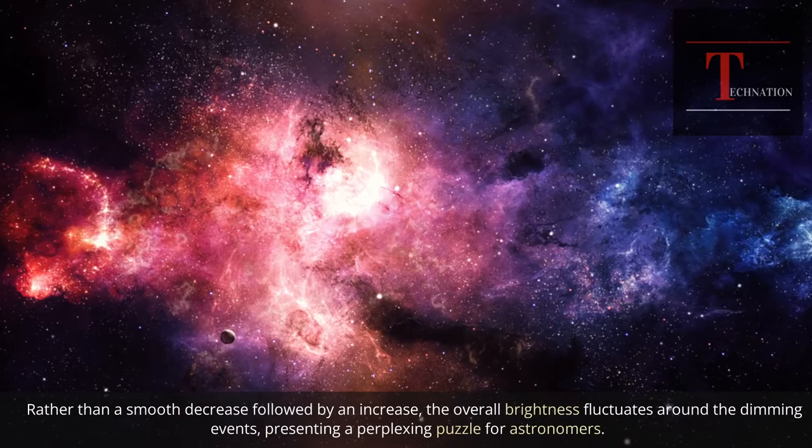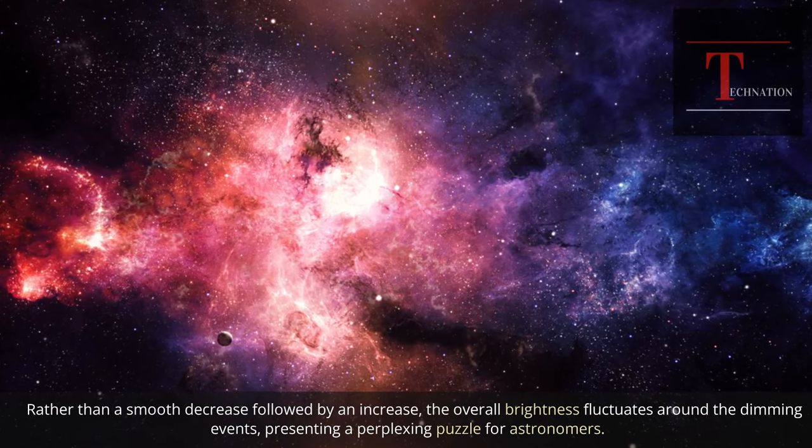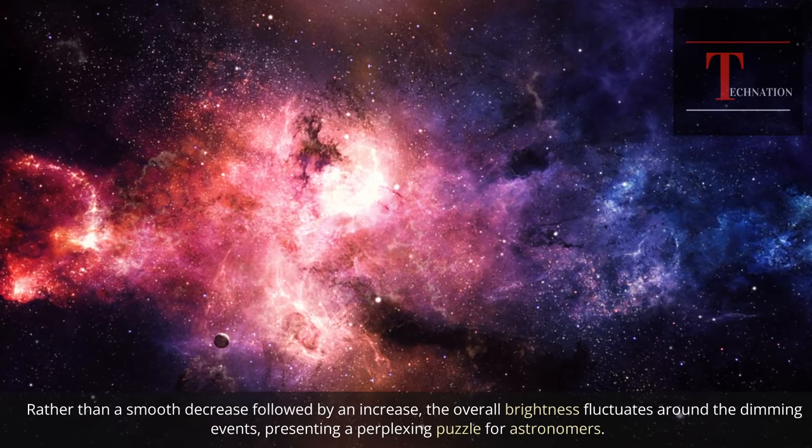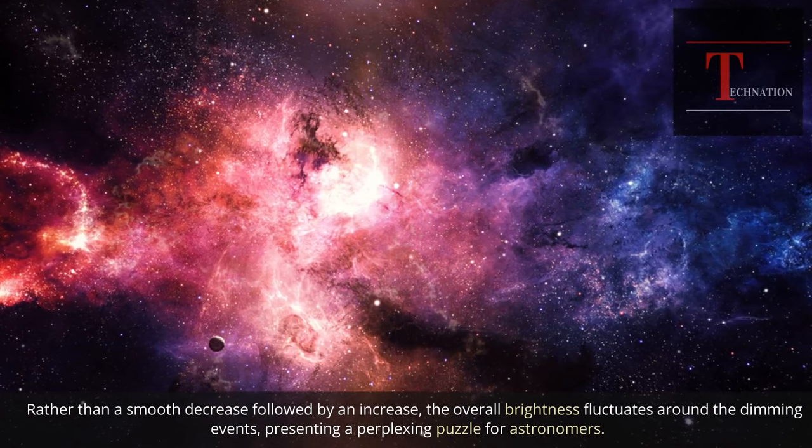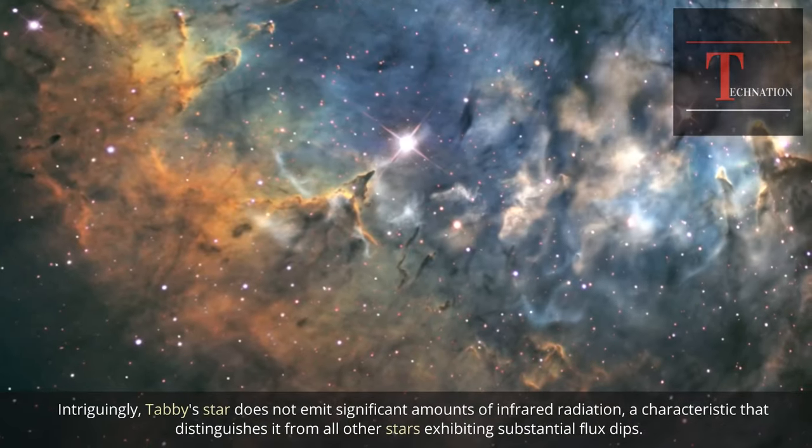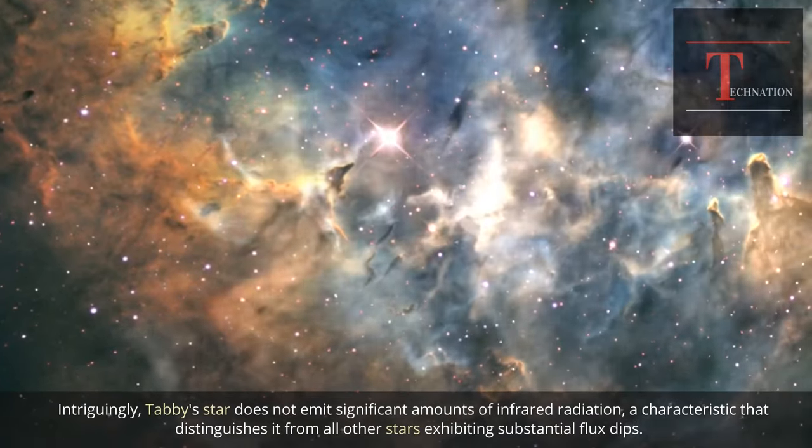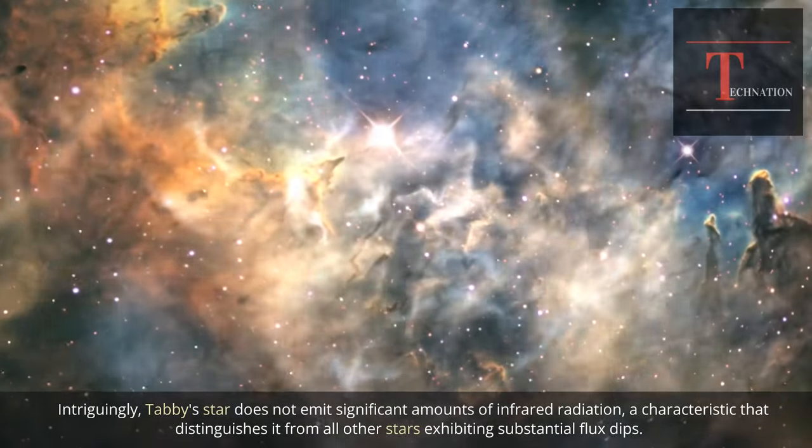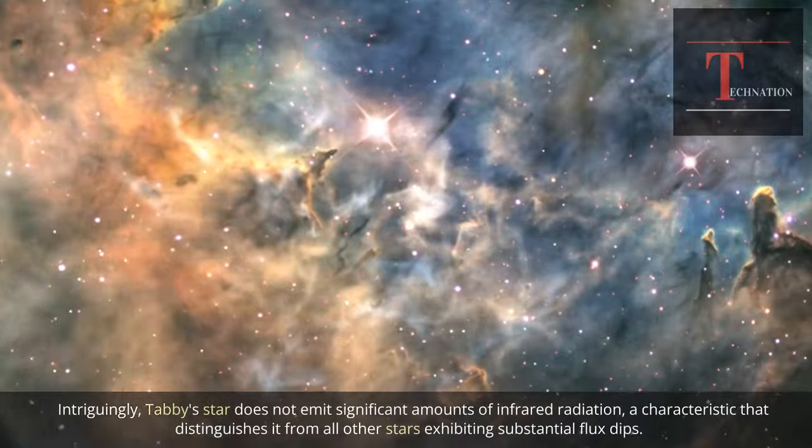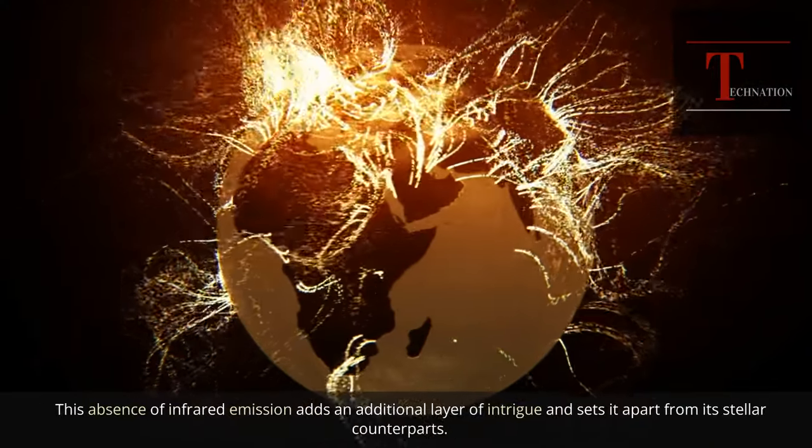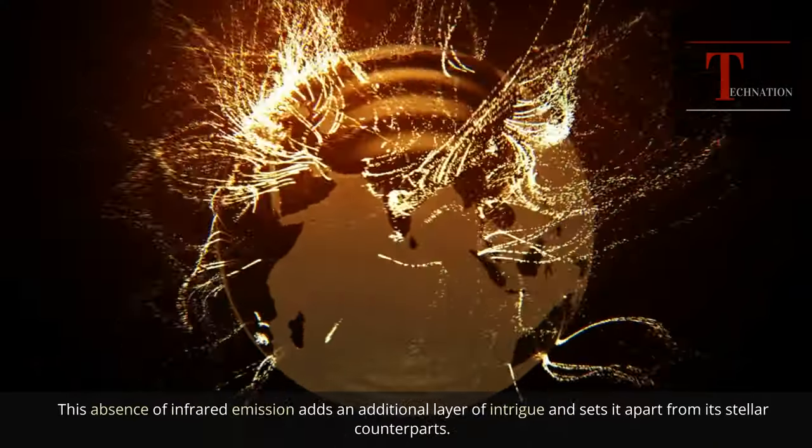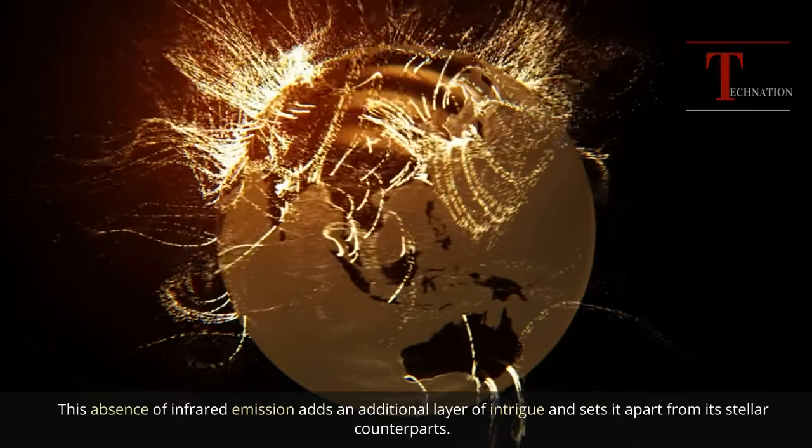Rather than a smooth decrease followed by an increase, the overall brightness fluctuates around the dimming events, presenting a perplexing puzzle for astronomers. Intriguingly, Tabby's star does not emit significant amounts of infrared radiation, a characteristic that distinguishes it from all other stars exhibiting substantial flux dips. This absence of infrared emission adds an additional layer of intrigue and sets it apart from its stellar counterparts.